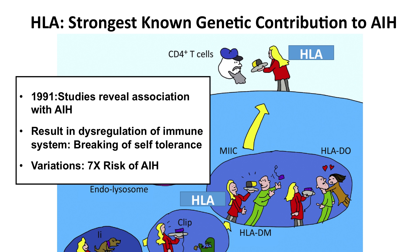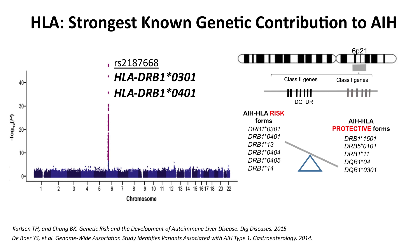We know that this HLA molecule has been associated with this disease since the early 90s, and we know that this problem results in the breaking of self-tolerance — meaning your body's ability to attack itself. We think that patients who have this mutation or variation have seven times the risk of AIH, which is pretty substantial. This is what's called a Manhattan plot — what's most significant is that peak, which represents the HLA gene. It is most significant compared to all the other genes along the blue border.